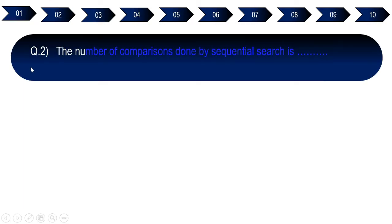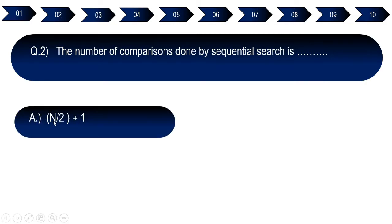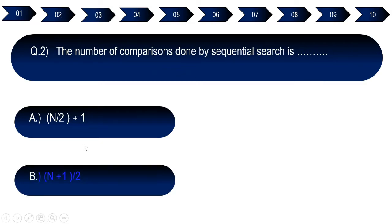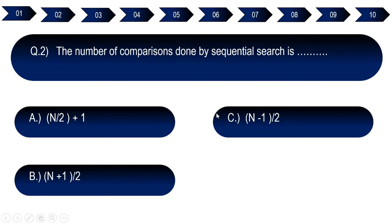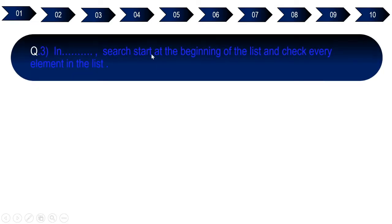Question number two: The number of comparisons done by sequential search is — Option A: (n/2) + 1. Option B: (n+1)/2. Option C: (n-1)/2. Option D: (n+2)/2. The right answer for question number two is option B, (n+1)/2.